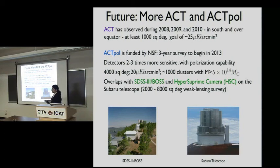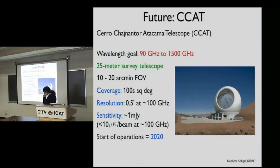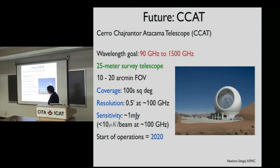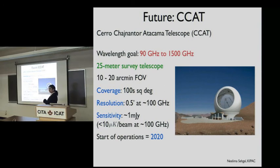Looking further into the future, there is the CCAT telescope, envisioned for the Atacama Desert. It will also have capabilities to do SE weak lensing and go far into the infrared. It should have a 20-meter aperture, cover hundreds of square degrees at half-arcminute resolution, and reach better than 10 microkelvins per half-arcminute. Operations would start around 2020. This was the only medium-ground project highlighted in the Astro2010 US Decadal Review, and I've heard it ranked number three in the Canadian Decadal Review as well. Primary partners are Caltech and Cornell, along with the University of Waterloo and others.